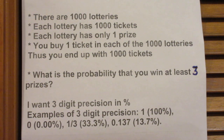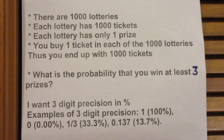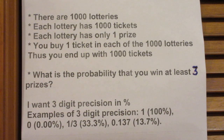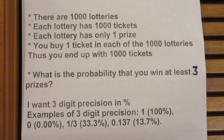What was the problem? There are a thousand lotteries, all different. Each lottery has a thousand tickets. Each lottery has only one prize. You buy one ticket in each of the thousand lotteries, so you end up with a thousand tickets. What is the probability that you win at least three prizes? And I want three-digit precision.